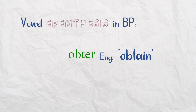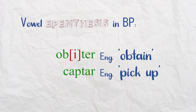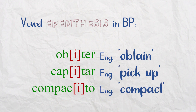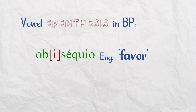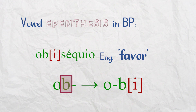The word for 'obtain' in Brazilian Portuguese is 'obter' or 'obter,' depending on the dialect. If you want to speak more fluently and naturally you should say 'obter.' The word for 'pickup,' which you would assume is 'captar,' is actually 'capitar.' And 'compact' is 'compactu' — not 'compactu.' 'Favor/obsequiu' becomes 'obsequiu,' so 'ob' becomes 'oby.' When it's 'ob,' that B is part of the coda in one syllable, but you break it into two syllables and it becomes part of the onset: 'ob' becomes 'oby.'